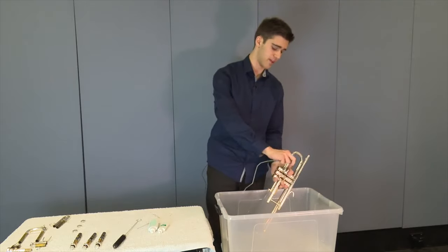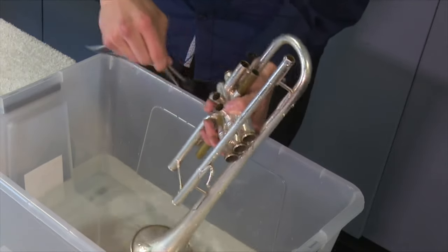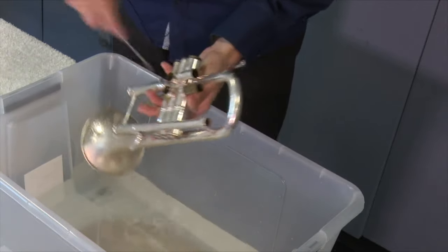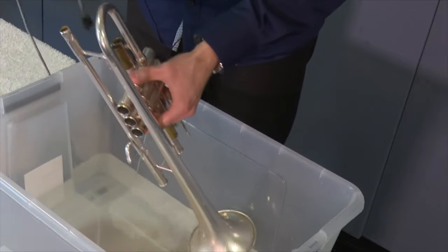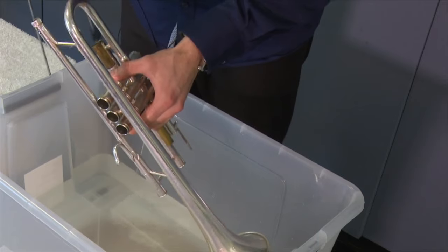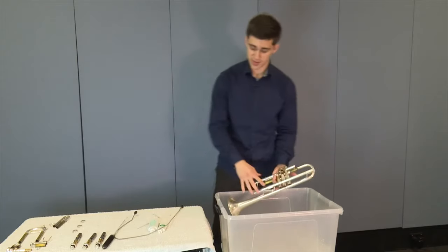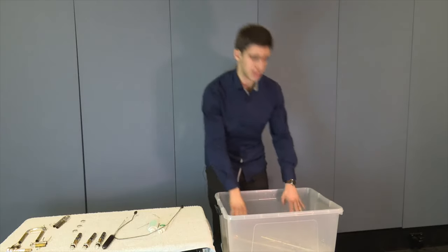Then we're going to put our snake cleaner in these two pipes here. Because these are small pipes, we won't need to do it as much. And the same goes for these two pipes here. After we've done putting the snake coil through all the pipes, we're going to submerge the trumpet in water and allow it to sit for two minutes.